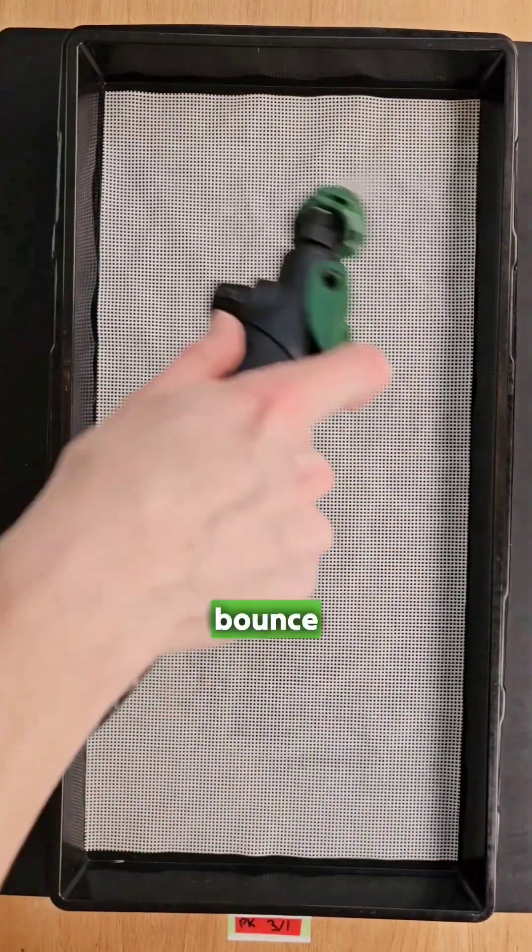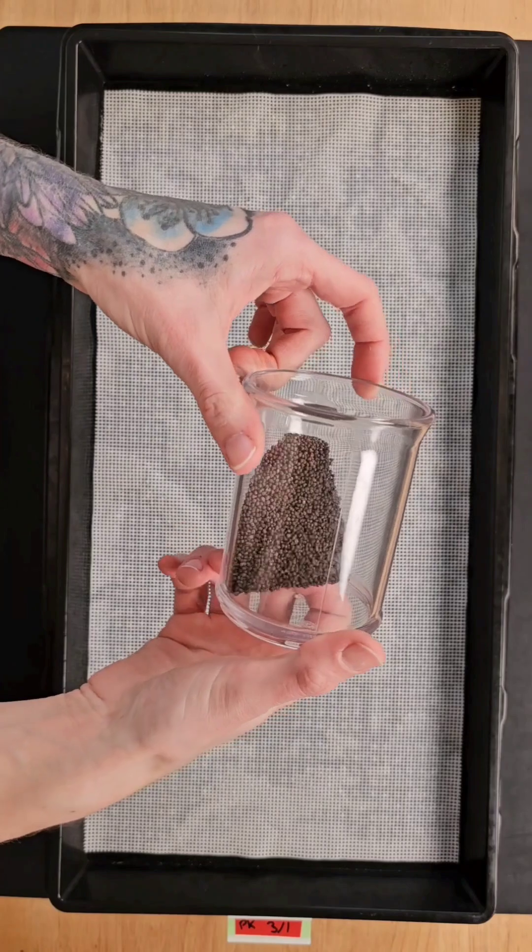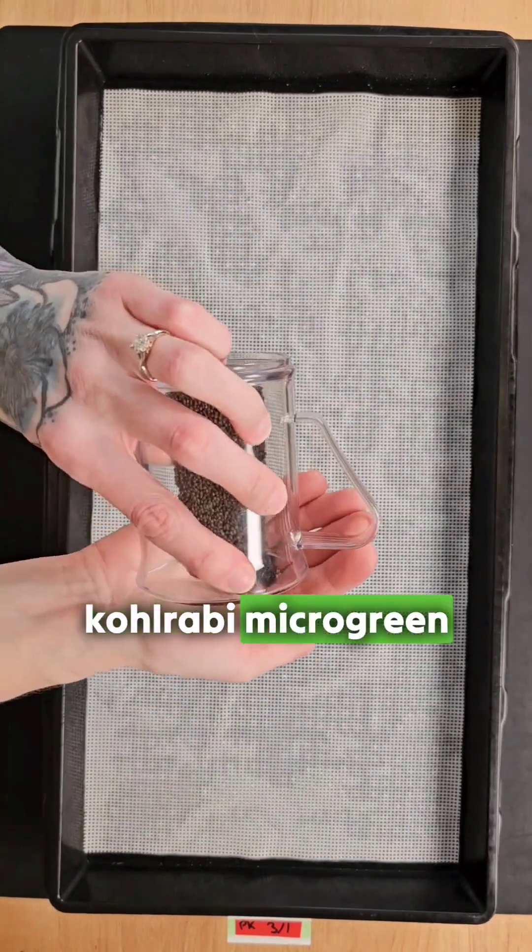To prevent seed bounce, we give it a light mist. Then we seeded the medium with purple kohlrabi microgreen seeds.